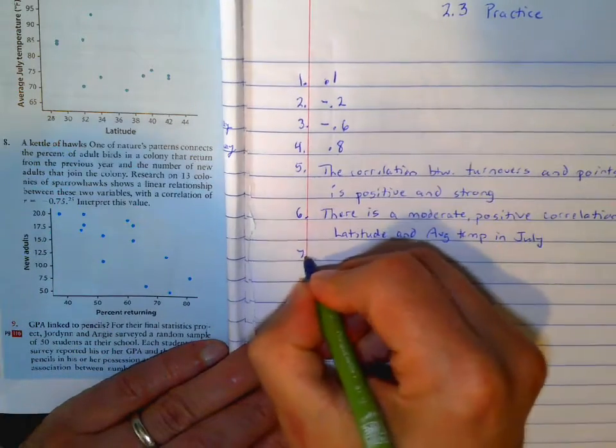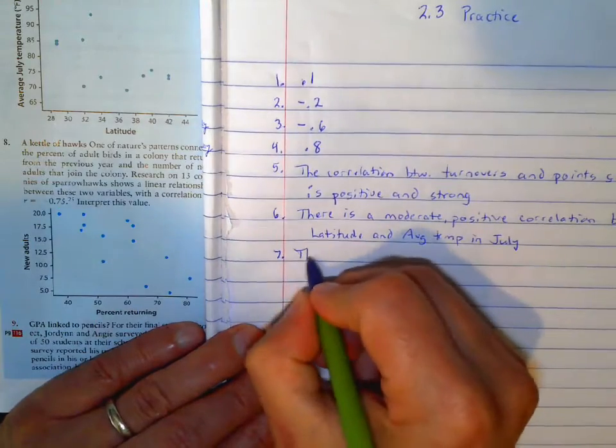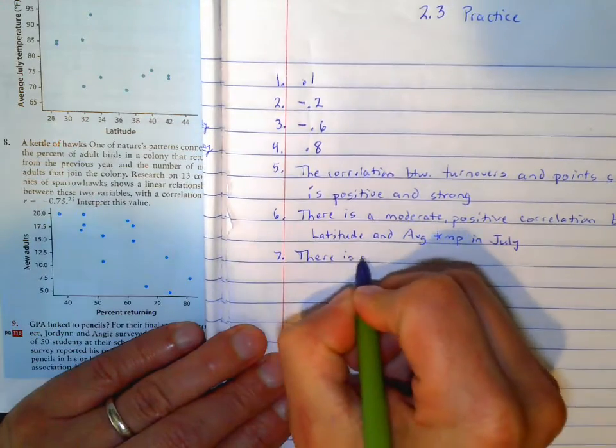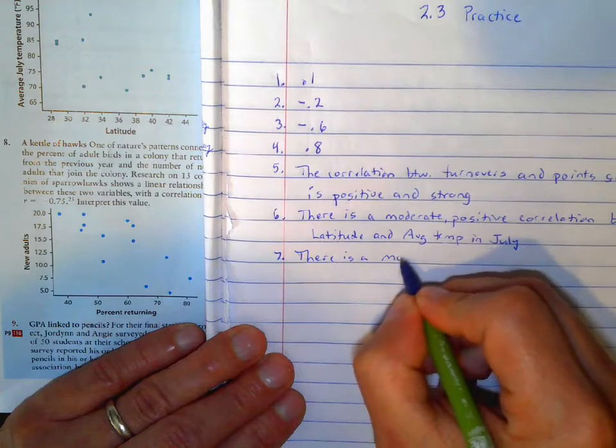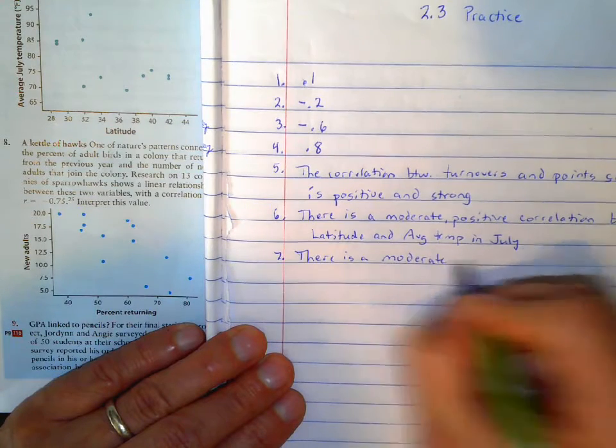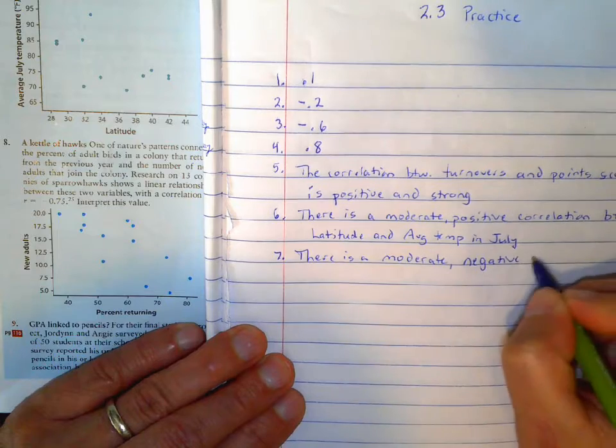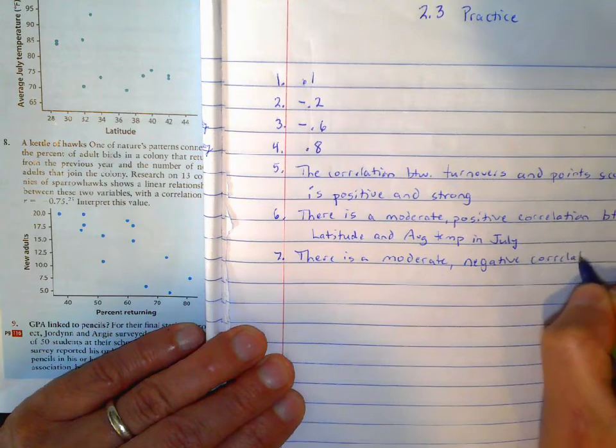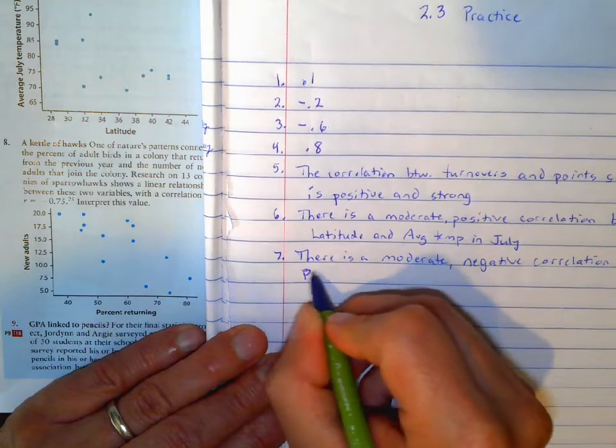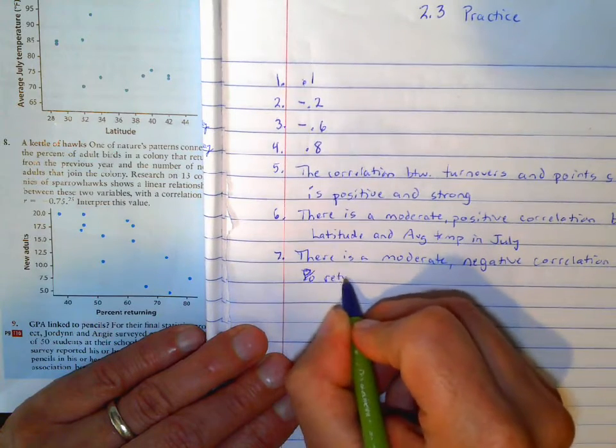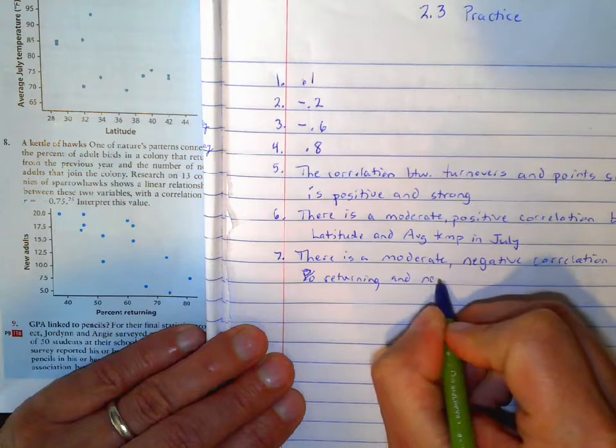So if we want to interpret that, we can say there is, and that seems moderate, and it's negative correlation between percent returning and new adults.